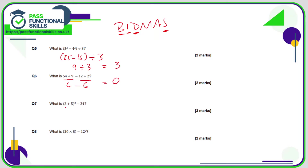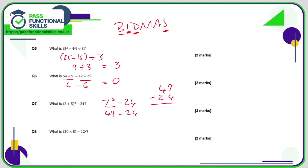Question 7: we have brackets, so let's do those first. Inside the brackets is 2 plus 5, which is 7. The question is now 7 squared take away 24. We have indices and subtraction, so indices first: 7 times 7 is 49. The question is 49 take away 24 — 9 minus 4 is 5, 4 take away 2 is 2, so the answer is 25.